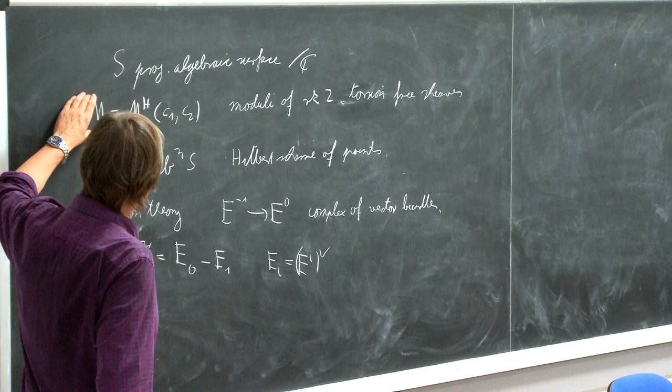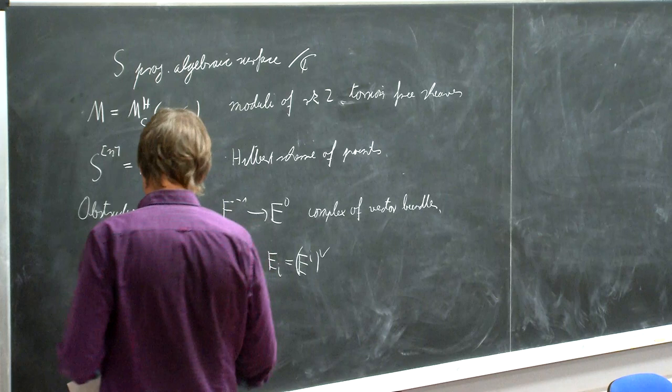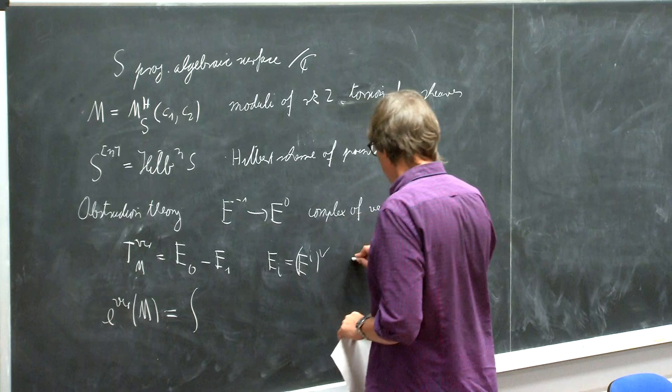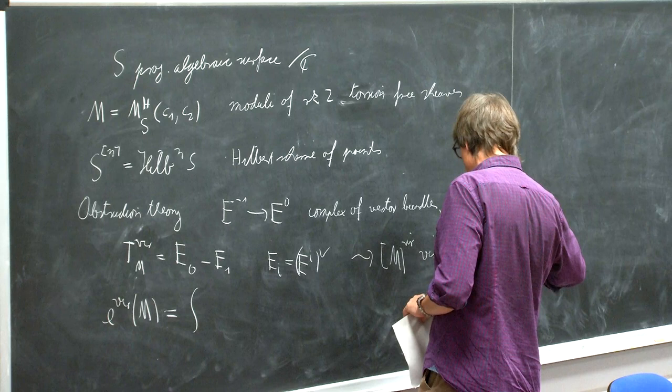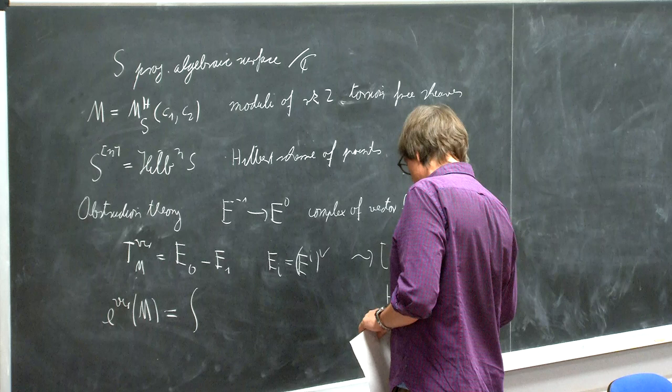The virtual tangent bundle would be E0 minus E1, where E_i is equal to the dual of E^i. We had wanted to compute something like the Euler number of these moduli spaces, and this was supposed to be replaced by the virtual Euler number, which would be the evaluation. If one has such an obstruction theory with these properties, it leads to the existence of a virtual fundamental class.